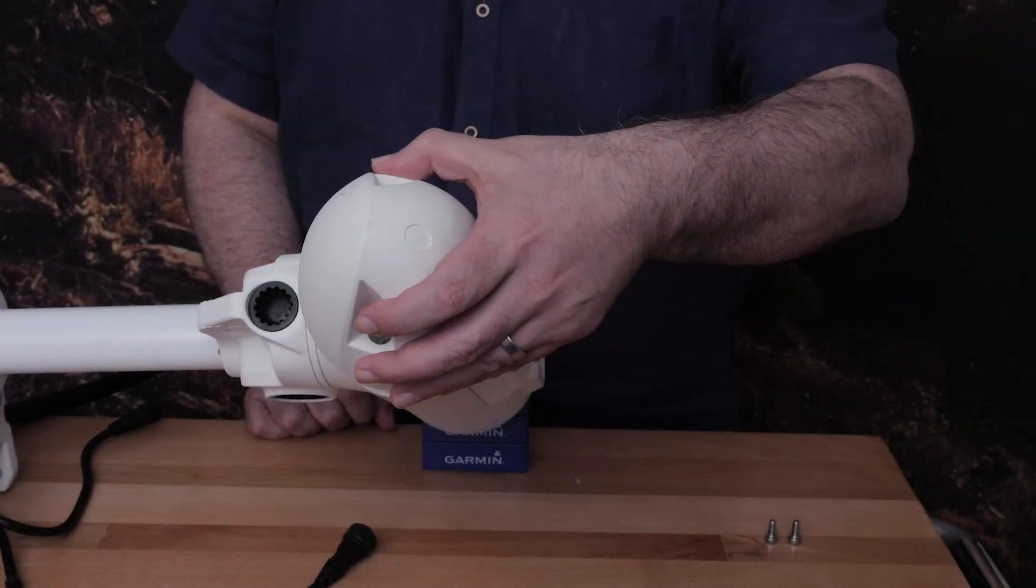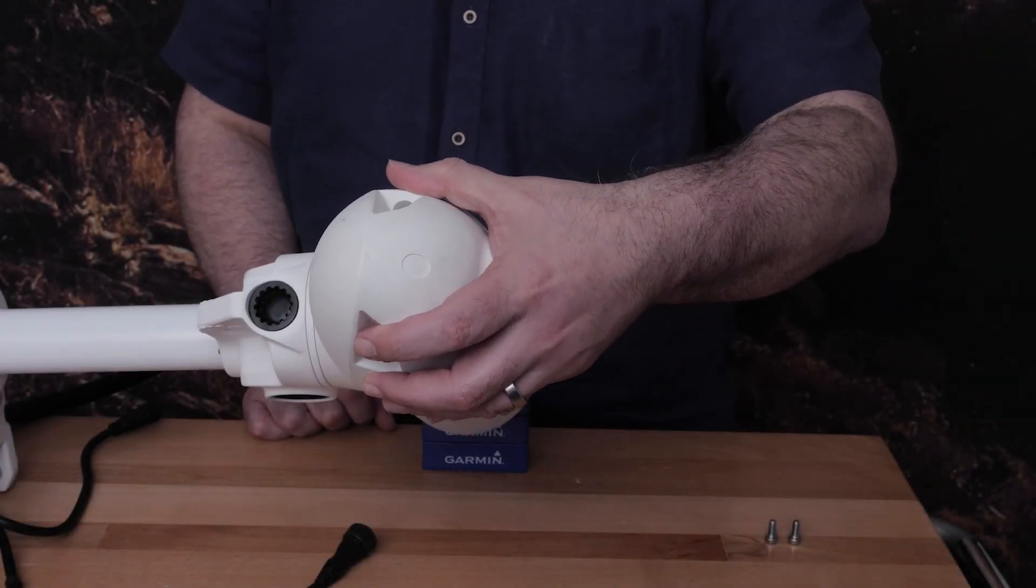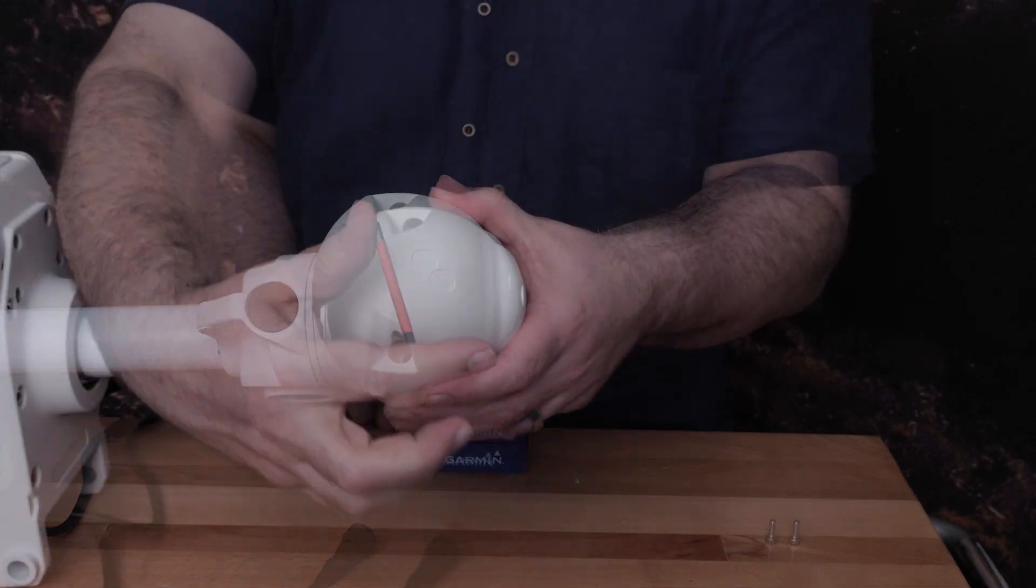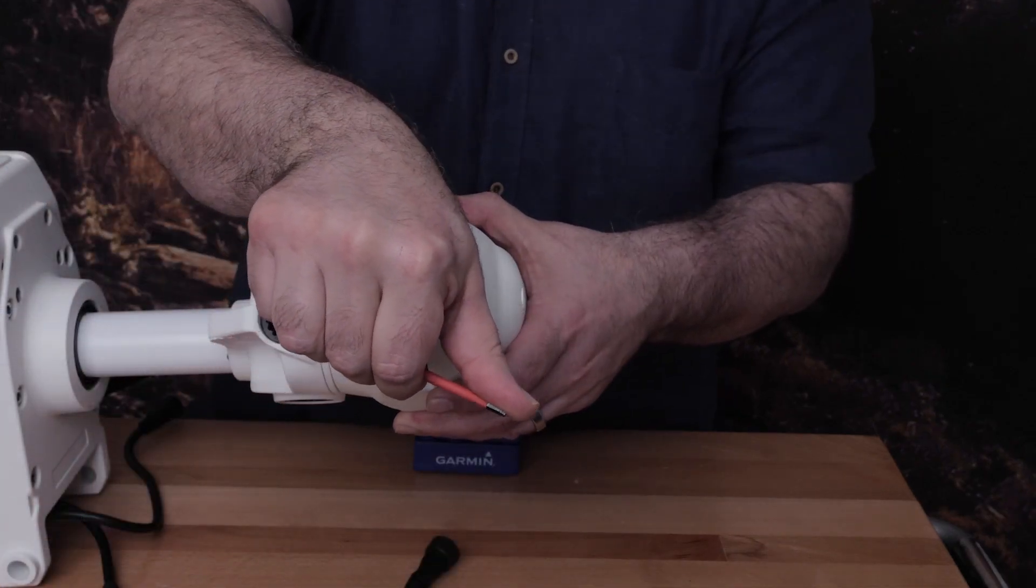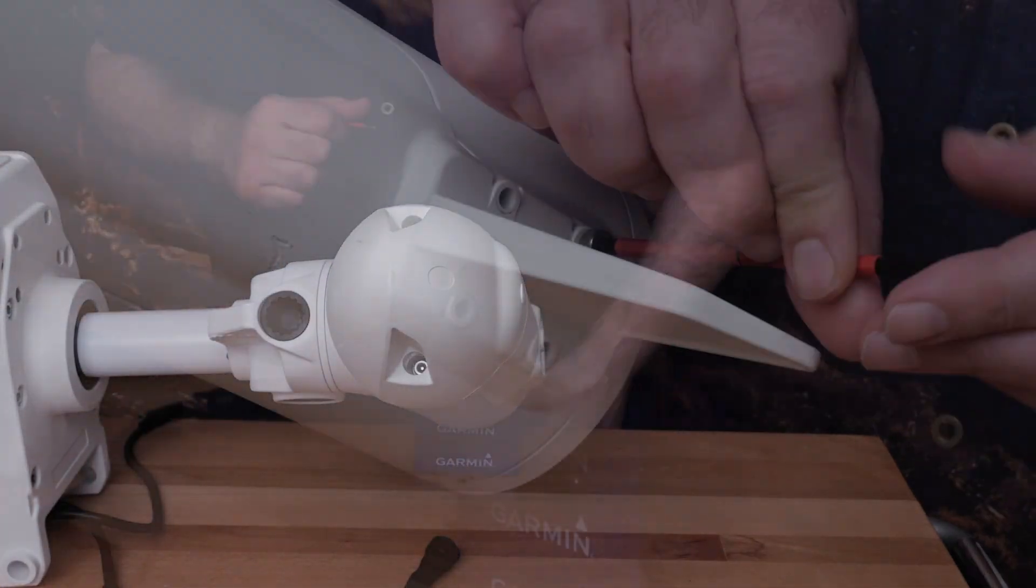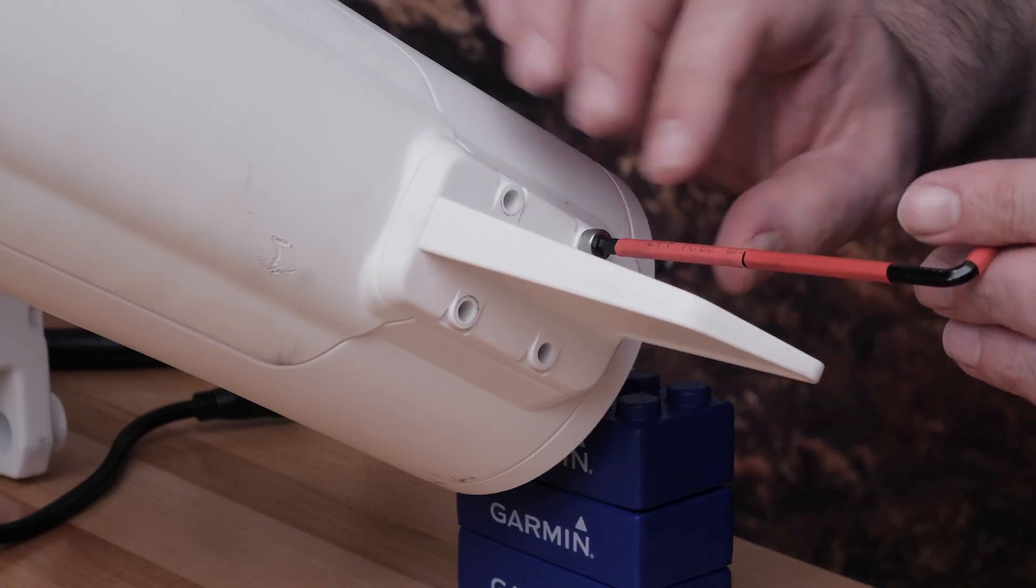On the 90 inch trolling motor, the nose cone and skeg will need to be installed on the motor using a 4 millimeter hex bit or wrench. For the skeg, make sure the longer end faces the propeller side.